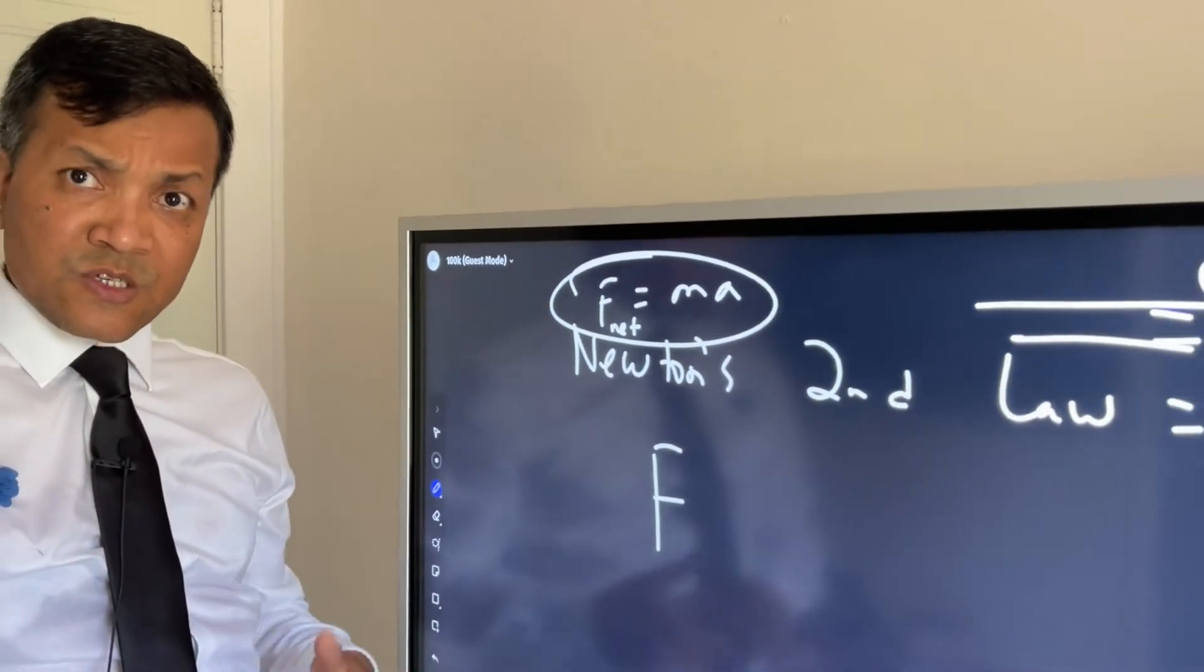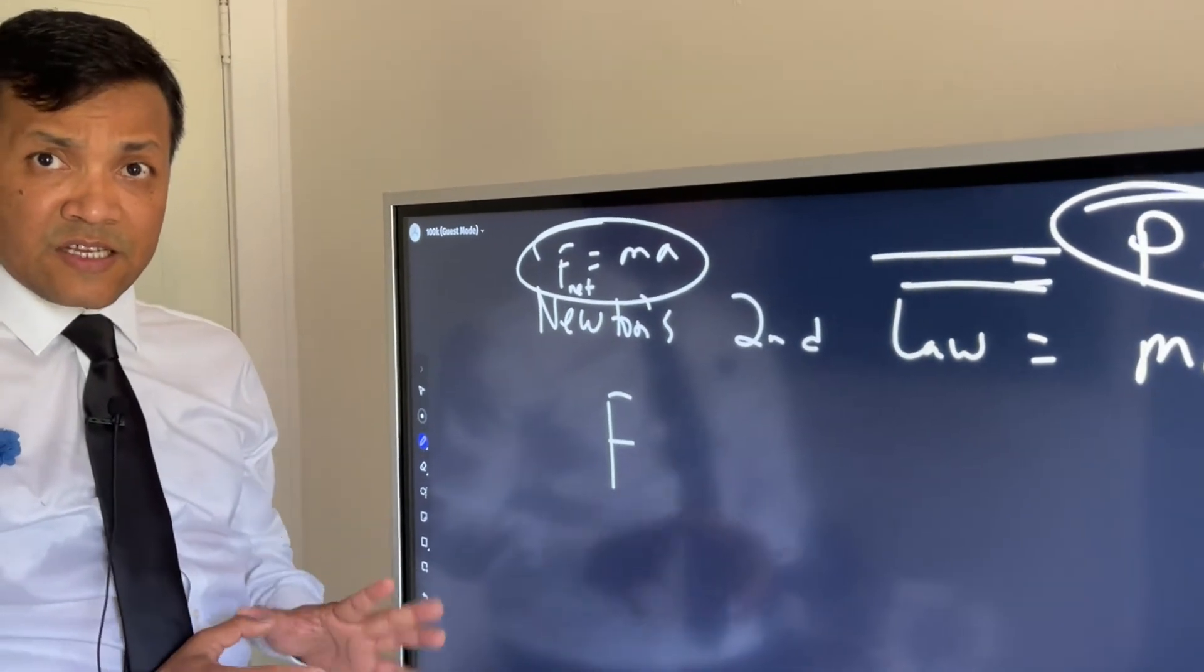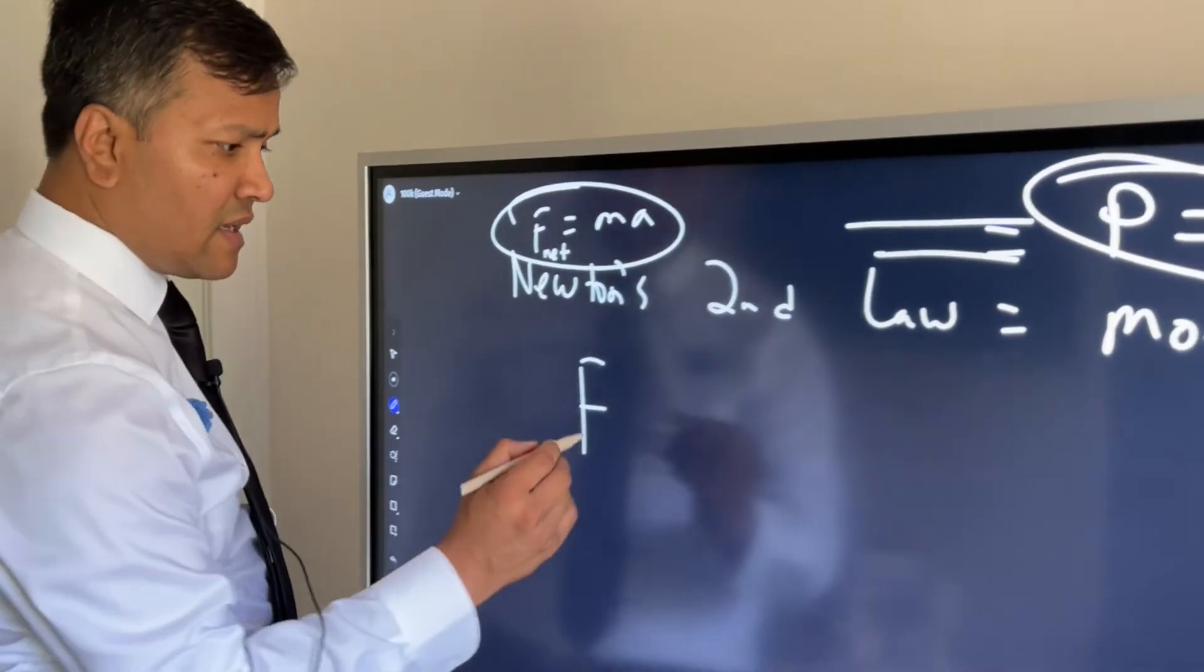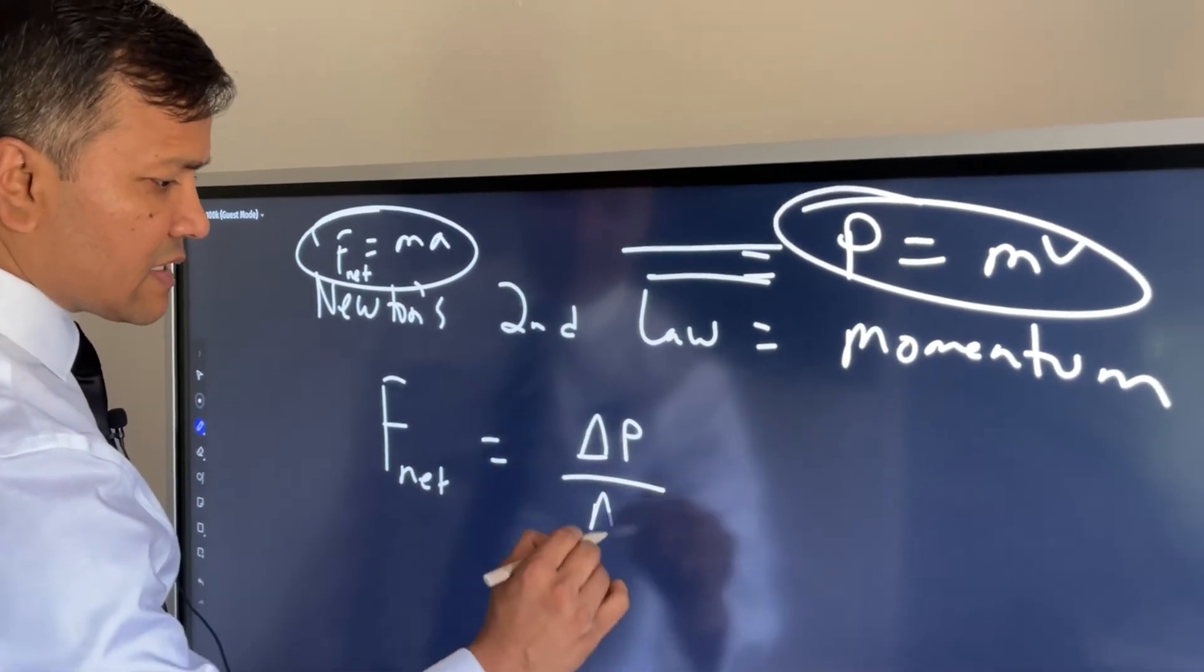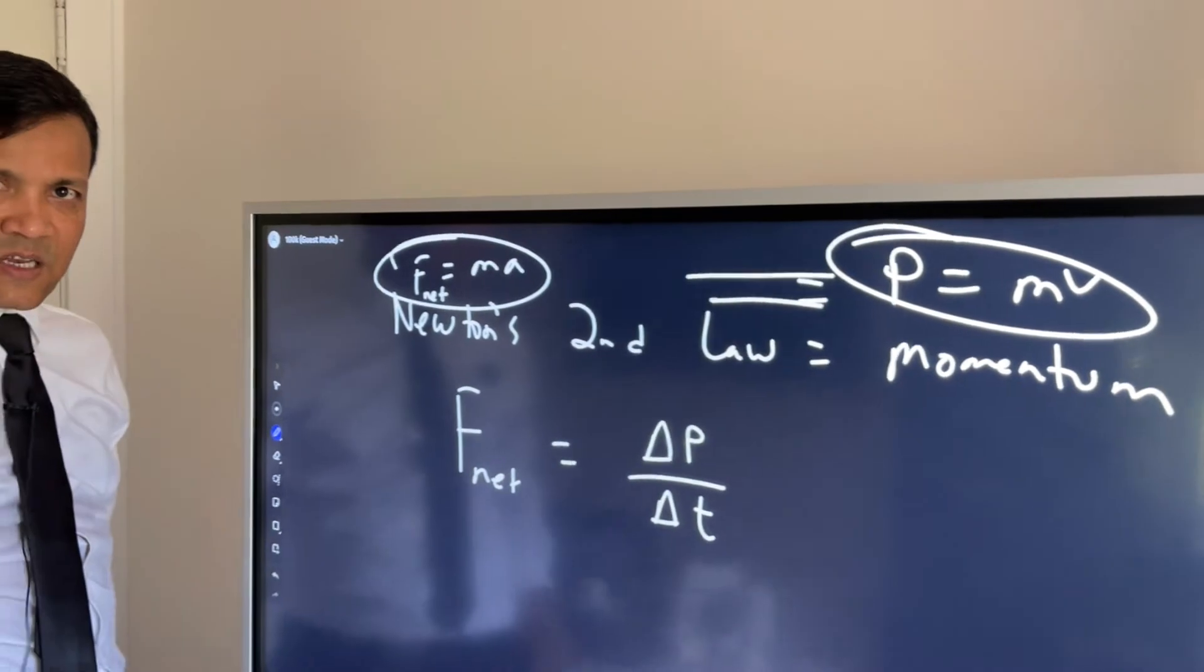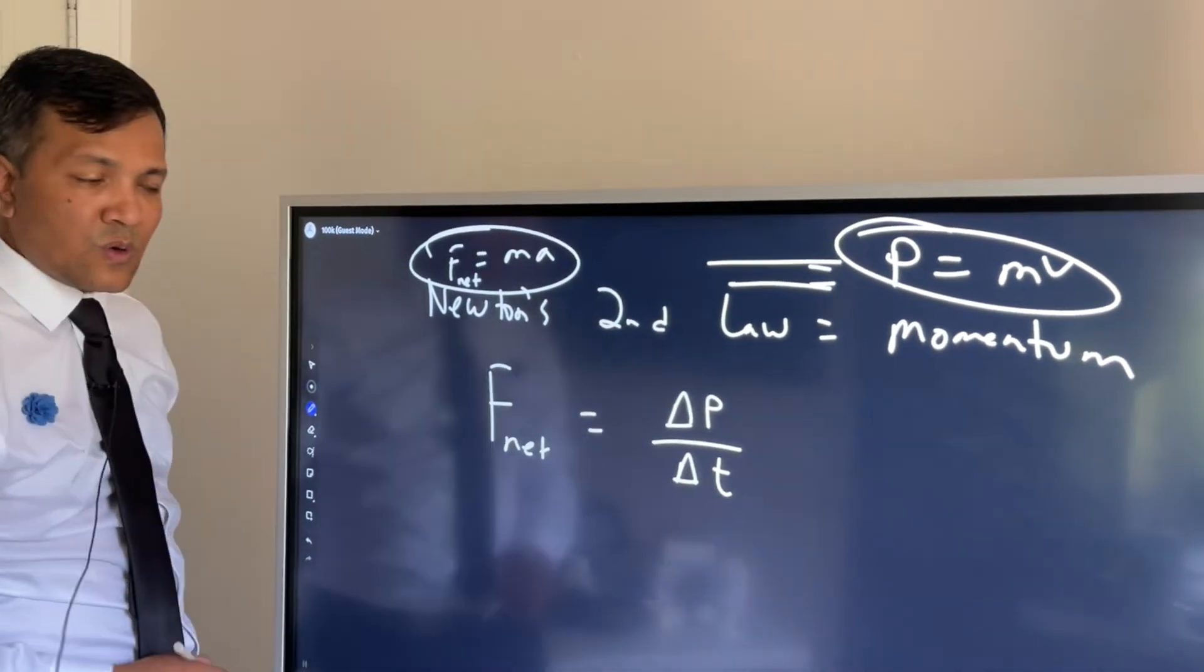So Newton wrote in his Principia Mathematica, which he conceptualized in 1665 and published in 1687, and he wrote it like this: Δp/Δt. This is how he wrote his second law. Now let's see how far we go from here.